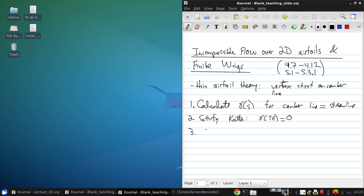And then finally, third, we calculate the circulation by integrating along the vortex sheet the local strengths. And finally, we can get the lift per unit span using the Kutta-Joukowsky theorem.